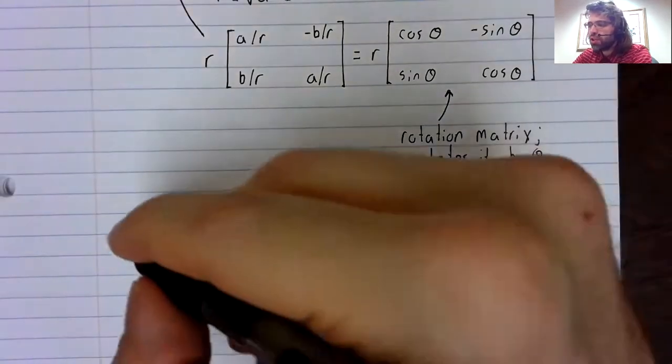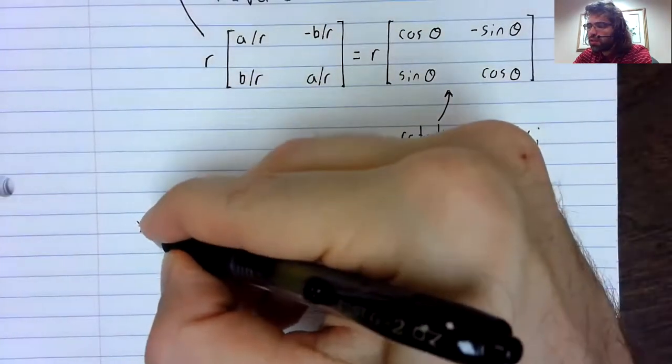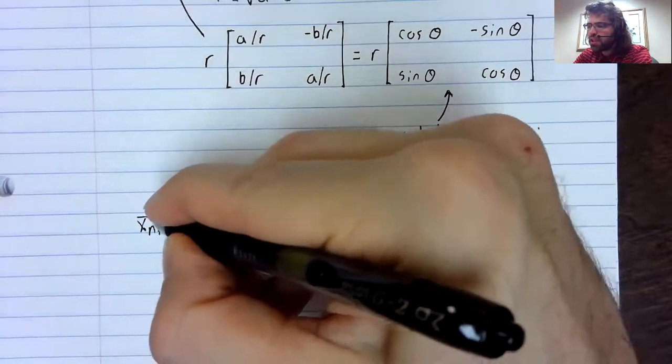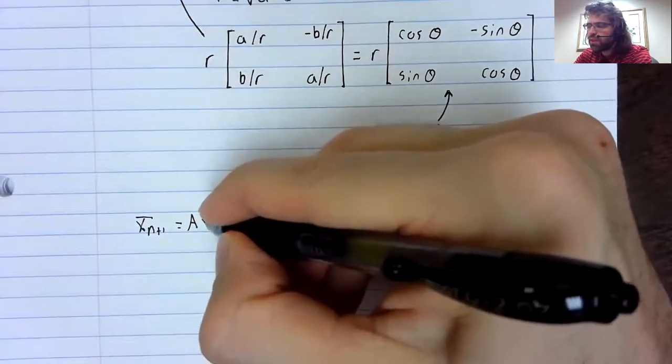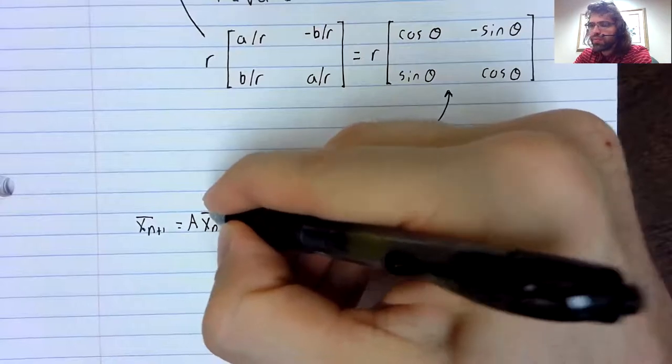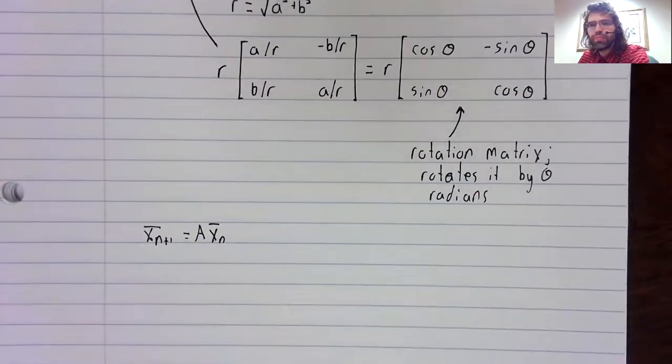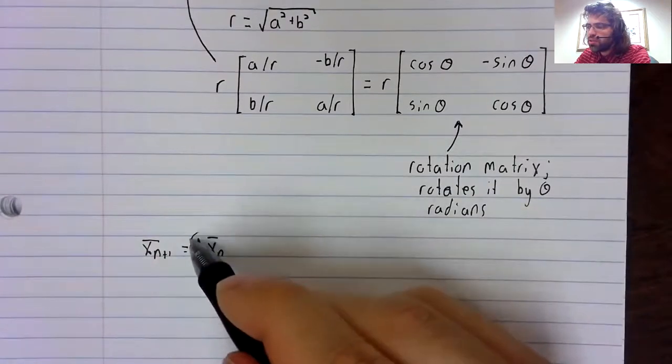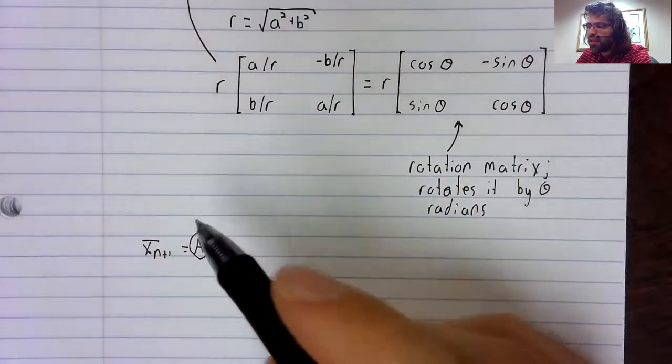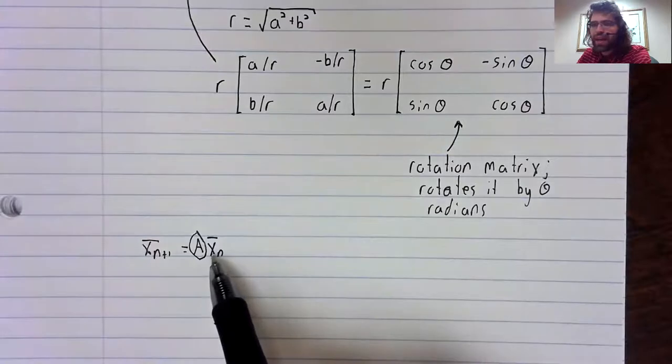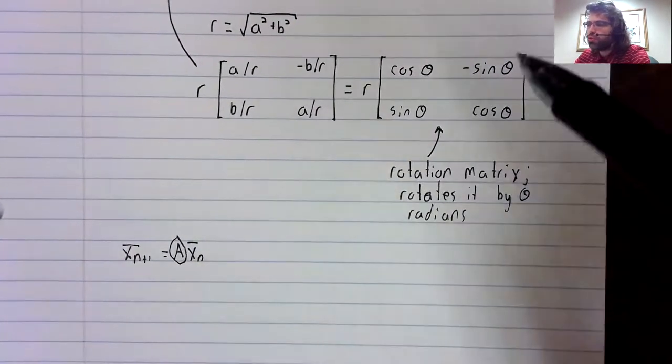So now look at a discrete dynamical system. What does multiplying x sub n by A do?